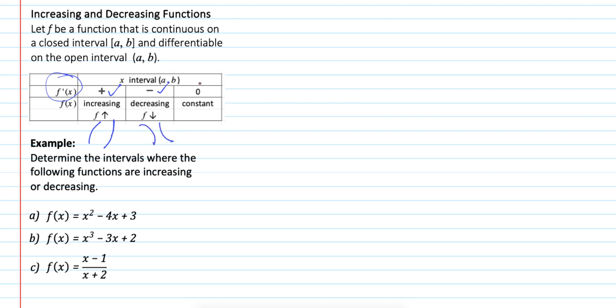Finally, if you substitute a number in an interval (a,b) into f prime and you get 0, then the function is a constant.